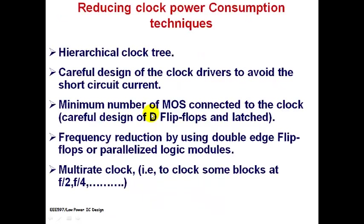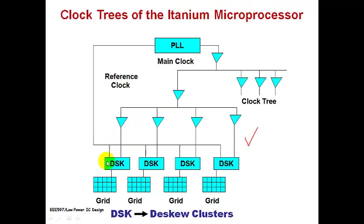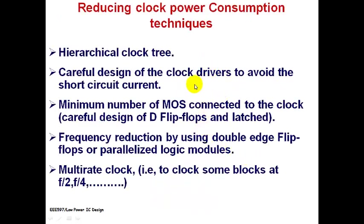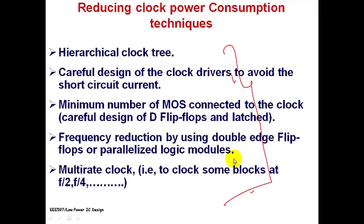This is the arrangement used in the Itanium microprocessor. These de-skewing clusters represent circuit redundancy — extra circuits we cannot avoid. The question then becomes: how can clock power be reduced, and what are the general ways and means to do so?